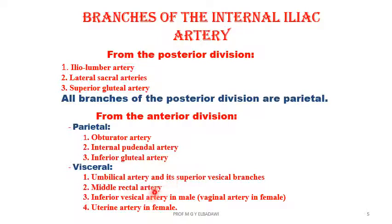Then the middle rectal artery to the rectum supplies the muscular coat. Then the inferior vesical in the male, which corresponds to the vaginal artery in the female. In the male, it supplies the ureter, the trigone of the bladder, the seminal vesicle, the ejaculatory duct, and the vas deferens — those five structures are derivatives of the mesonephric duct in the male.